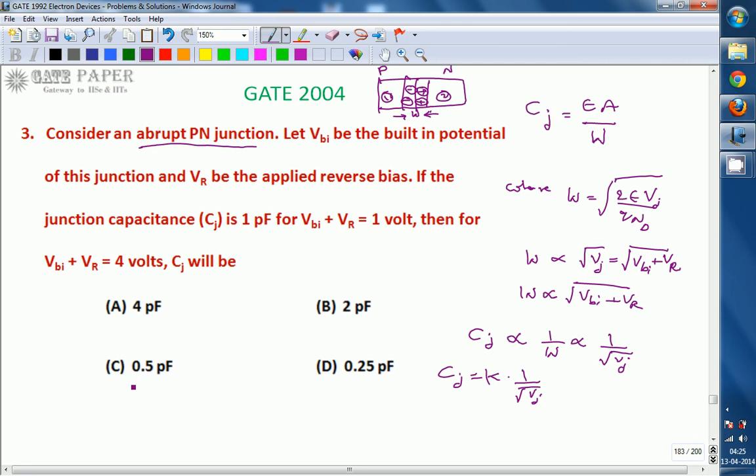From this, Cj1 is equal to, whenever VBI plus VR equals 1, by that time it is 1 picofarad, which is K by 1.